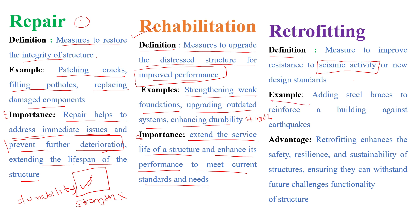As an example, you can add steel bracing or you can add a shear wall — there are a number of ways to improve the seismic resistance. If you are doing that, then you can call it retrofitting.